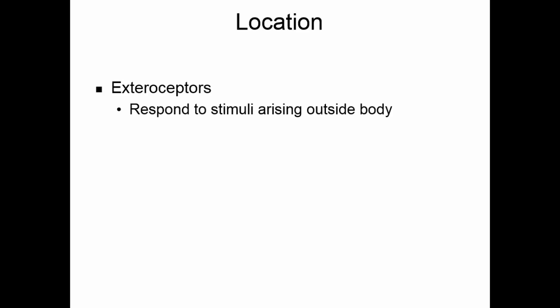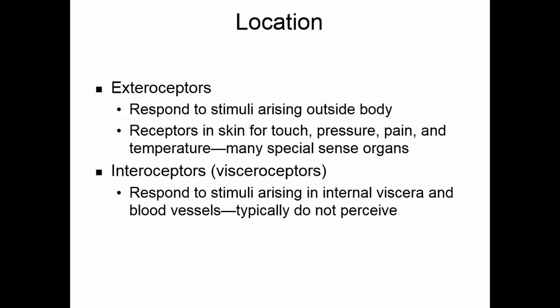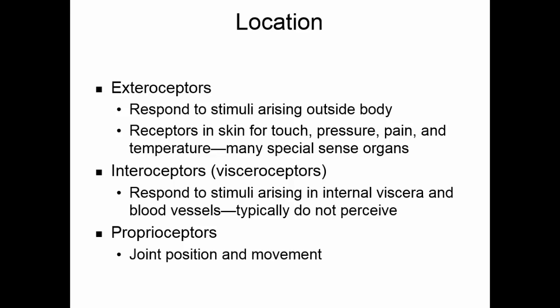Sensory receptors can also be classified based on their location. Exteroceptors respond to stimuli that come from outside the body. These receptors are located in the skin for touch, pressure, pain, and temperature, and all of your special sense organs are exteroceptors. Interoceptors, sometimes called visceroceptors, respond to internal stimuli — the stimuli from the organs and the blood vessels. Typically, we do not perceive information that comes through the interoceptors. Proprioceptors are a special class of interoceptor, positioned in the joint and picking up movement and joint position.